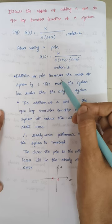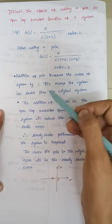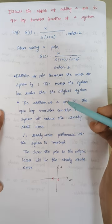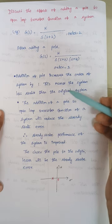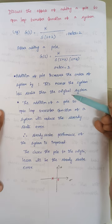Addition of a pole increases the order of the system by 1. Whenever the order of the system increases, there are more chances of a system to become unstable. This makes the system less stable than the original system since the order had increased.